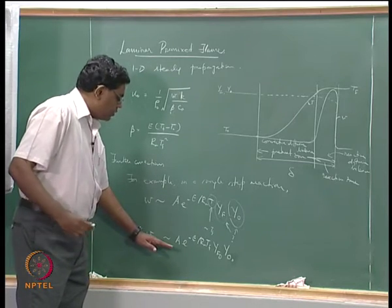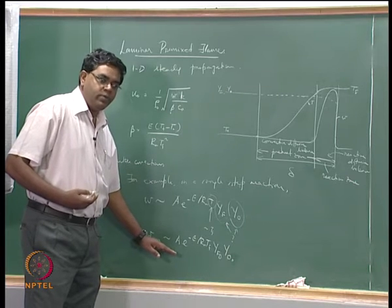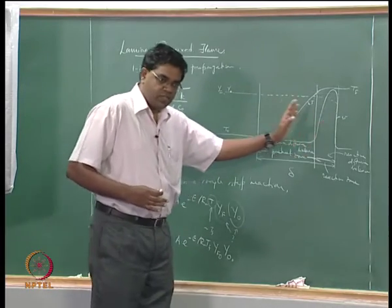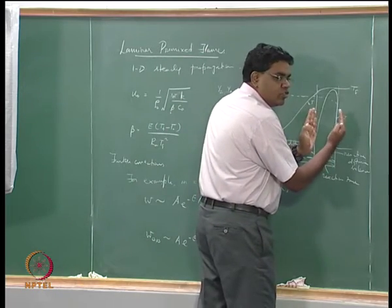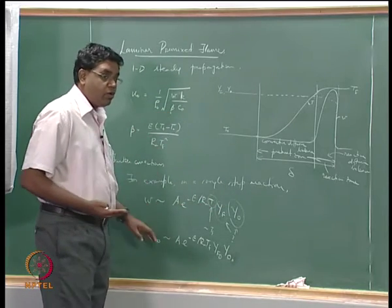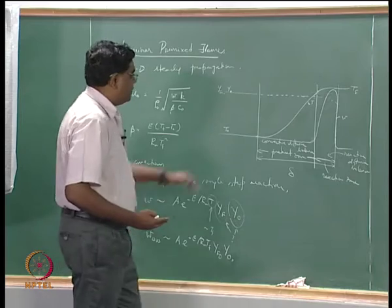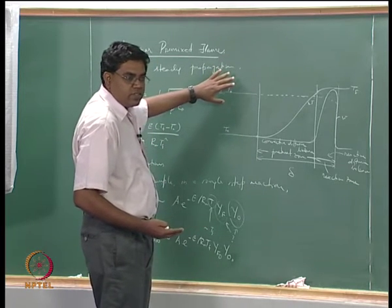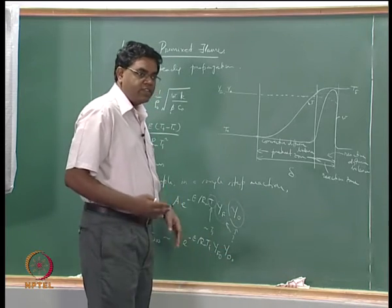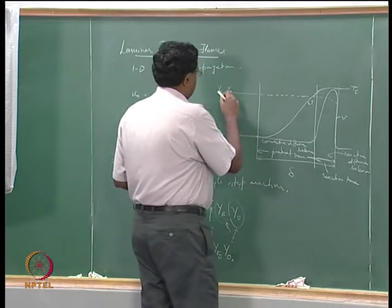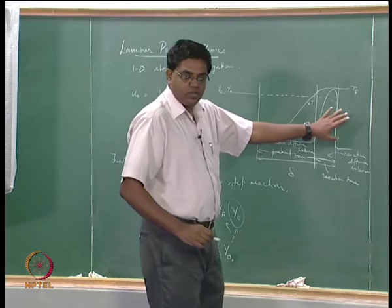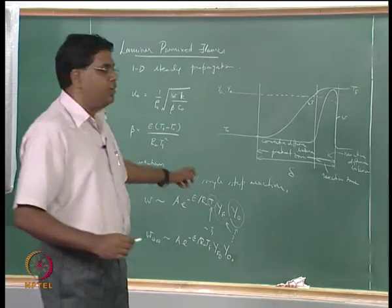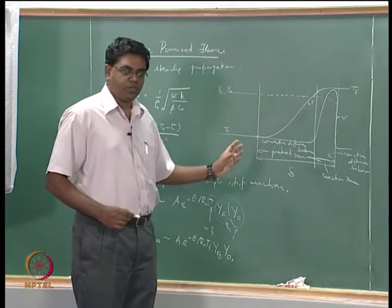This W₀∞ is actually a gross overestimate. Previously we assumed W is constant across the entire flame — a gross overestimate — then we constrained it to a smaller region and got the β factor. Now we find that using the flame temperature in the Arrhenius expression and the far-upstream reactant concentrations in the law of mass action is also an overestimate, because we cannot expect the mass fractions to drop so steeply. The question is: how do the mass fractions of the reactants actually vary across the flame?